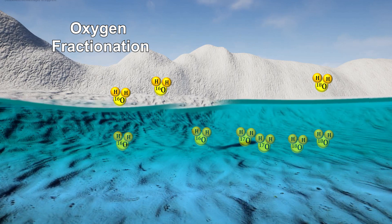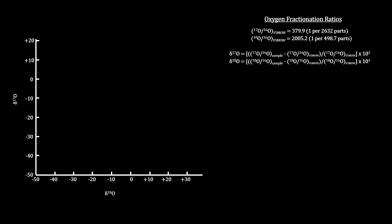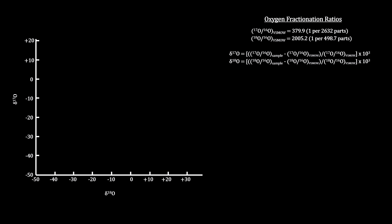The process is called isotopic fractionation. To take deviations like this into account, scientists measure the variations in the ratios of 17 over 16 and 18 over 16 against a standard called the Vienna Standard Mean Ocean Water.